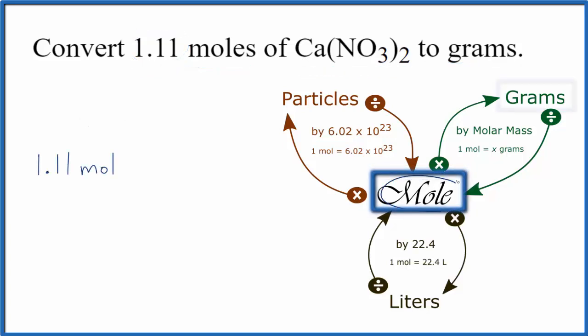When we go from moles to grams, we multiply by the molar mass. We find the molar mass by going to the periodic table and adding up the mass of each atom in calcium nitrate. If you need help finding the molar mass for Ca(NO3)2, there's a link at the end of the video and in the description.